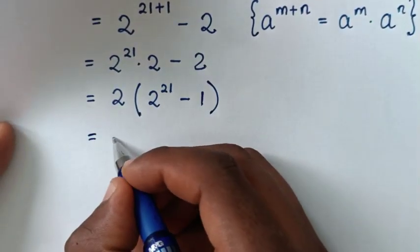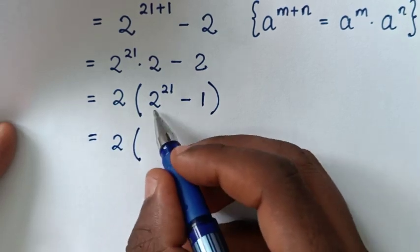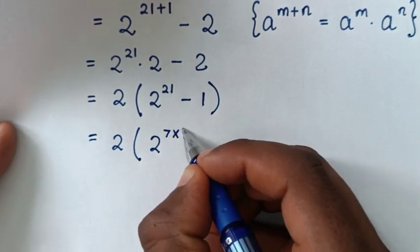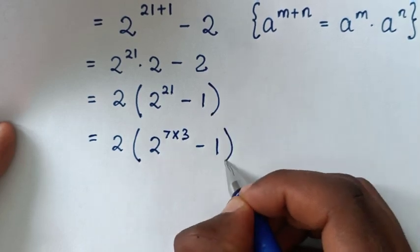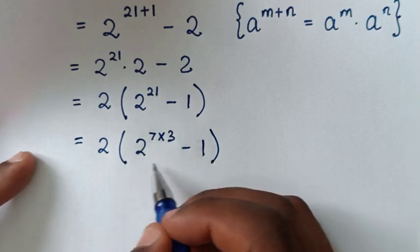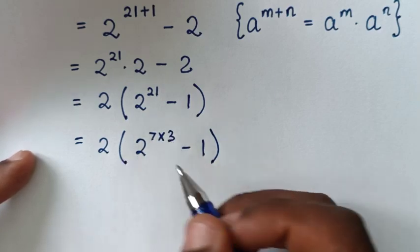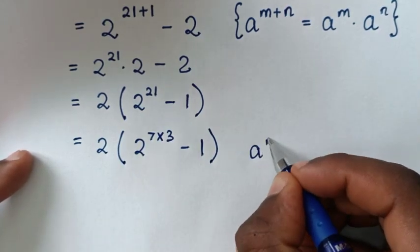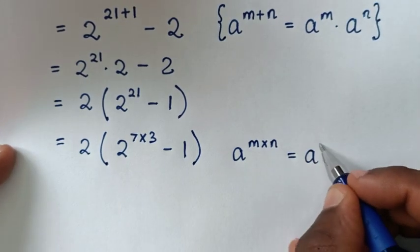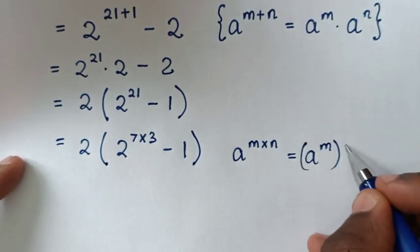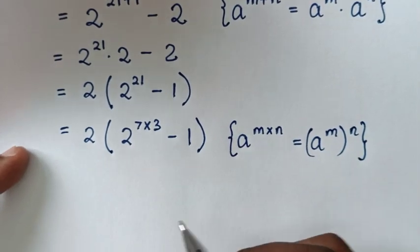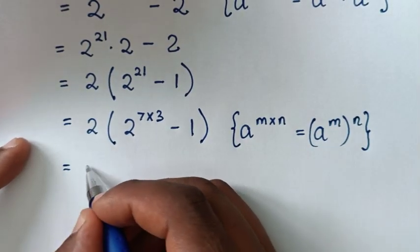It will be equal to 2 bracket, and 2 to the power of 21 is the same as 2 to the power of 7 times 3, then minus 1, bracket. From this exponent here we will apply the exponential rule which is a to the power of m times n equals a to the power of m, bracket, to the power of n.